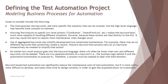Allowing test analysts to specify low-level actions — for example, specific keywords — makes tests much more capable of handling different situations. However, because these actions are tied directly to the GUI, it may cause the tests to require more maintenance when changes occur. These functional frameworks are directly dependent on the user interface, so if the UI is modified, the location of an object is moved, or properties of objects are changed, high maintenance is involved. Use of aggregated keywords may simplify development but complicate maintenance, so you need to make sure your team is well trained to update those scripts from time to time.